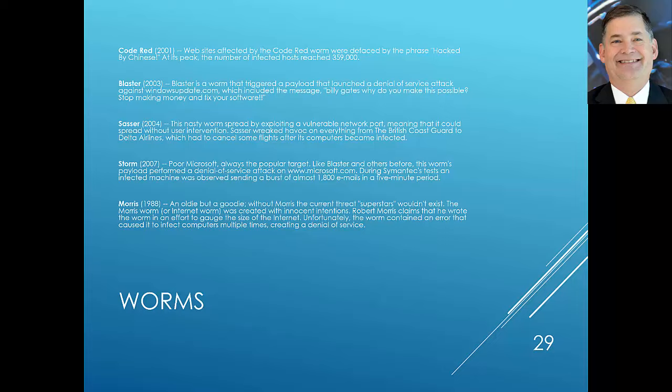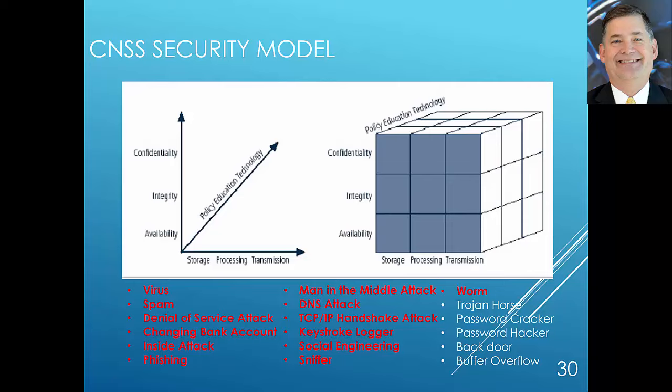Worms create copies of themselves; those copies spread and allow them to take over machines. They can be attacks against storage, processing, or transmission — the Morris Worm definitely was. You typically want technology that captures and protects you against worms. Worms are similar to viruses; you can identify signatures associated with them and block them. They can affect confidentiality, integrity, or availability — often availability. It's a pretty thin line between a worm and a virus; worms are self-replicating, while viruses typically require some user action.